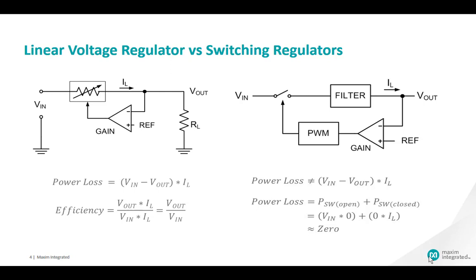What is the difference between a linear regulator and a switching regulator? The linear regulator operates as a variable resistor connected between the input power source and the output load, automatically adjusted by the control loop to maintain VOUT at the desired voltage regardless of load current. Linear regulators are very lossy, especially when the difference between VIN and VOUT is large. The switching regulator switches the input source, chopping it at a certain duty cycle, then uses an LC filter to smooth out the output voltage, making it inherently very efficient.